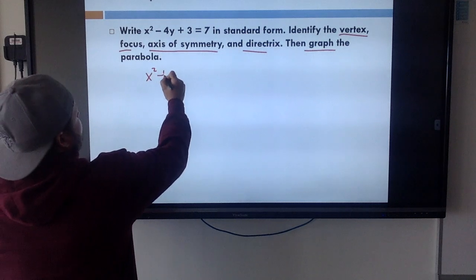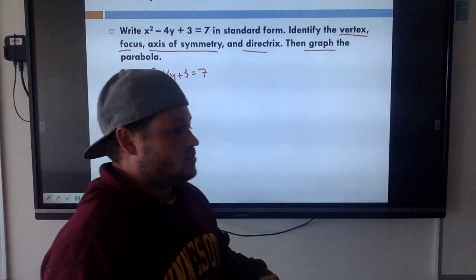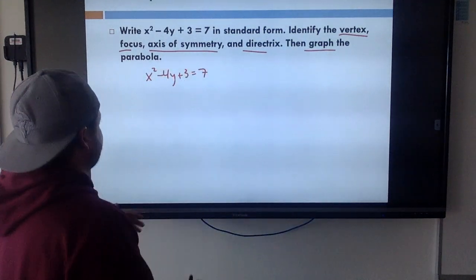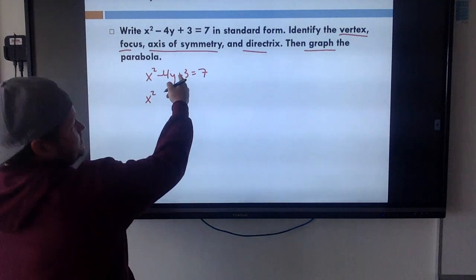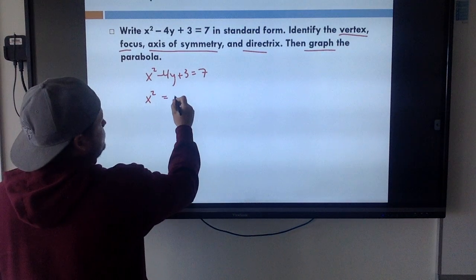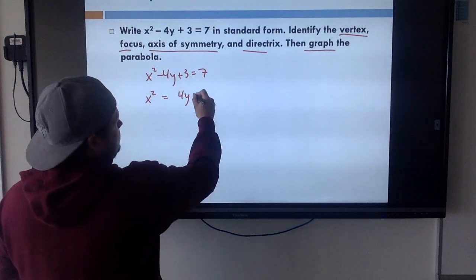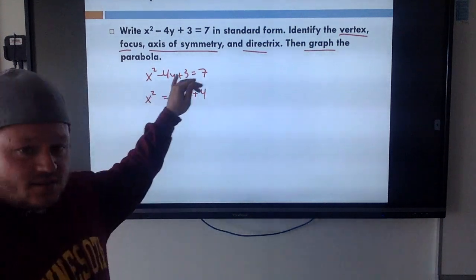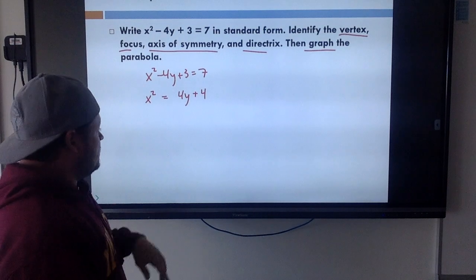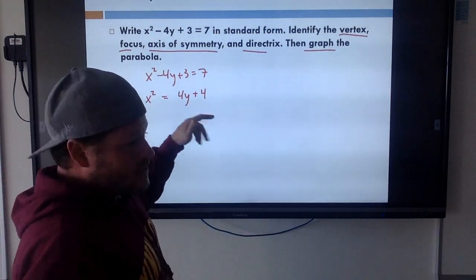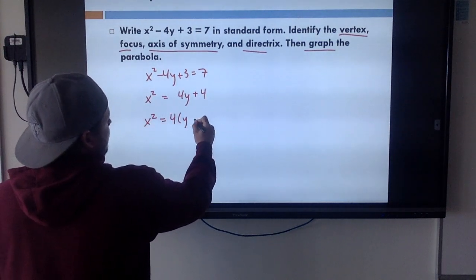Starting with x squared minus 4y plus 3 equals 7, our first step is to split up our x's and y's. I'm going to move the 4y over by adding 4y to both sides, and subtract 3 over. So it's going to be x squared equals 4y - because I added 4y to both sides - then subtract 3 from both sides and I get plus 4. So x squared equals 4y plus 4. Notice my x's and y's are split up and my constant is on the side opposite of my squared value.